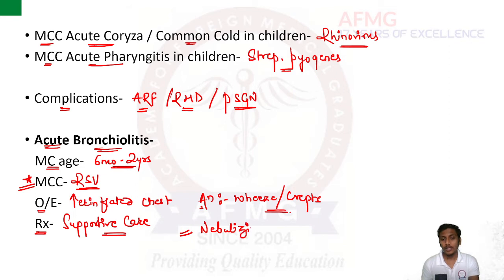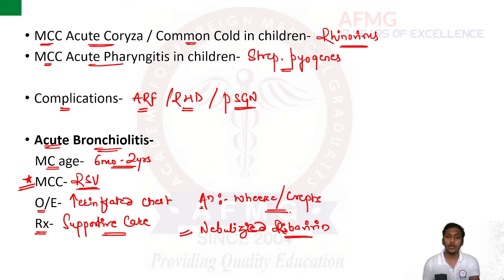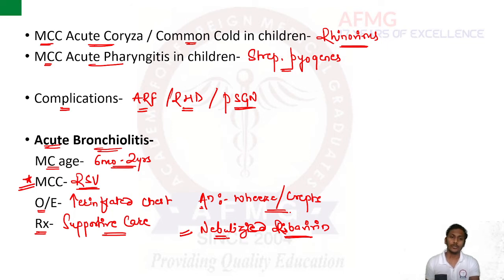Ribavirin is an antiviral drug. It is only given in cases of immunocompromised infants or children, or if the child is already on a ventilator. Only in these conditions is nebulized ribavirin given; otherwise supportive therapy with oxygenation is required.